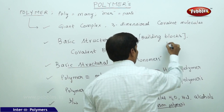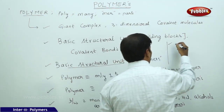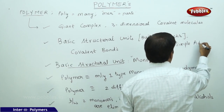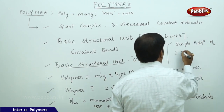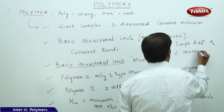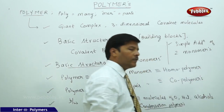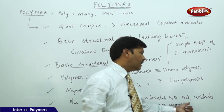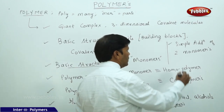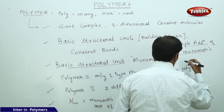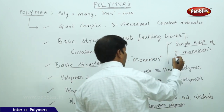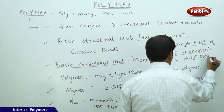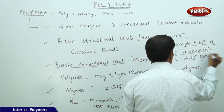If simple addition of two monomers takes place without the elimination of small molecules like H₂O, HCl, or alcohols, then such polymers are called addition polymers.